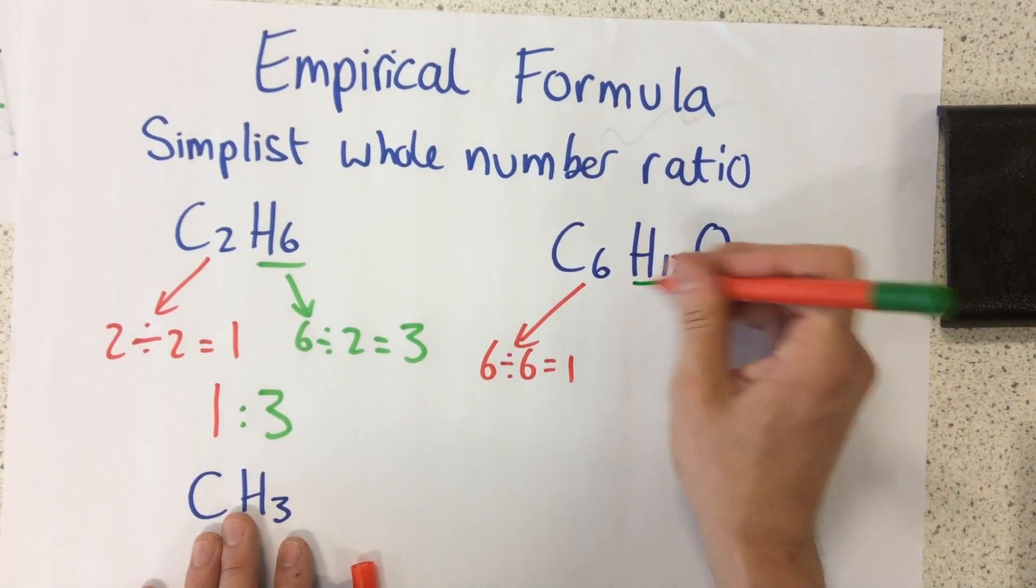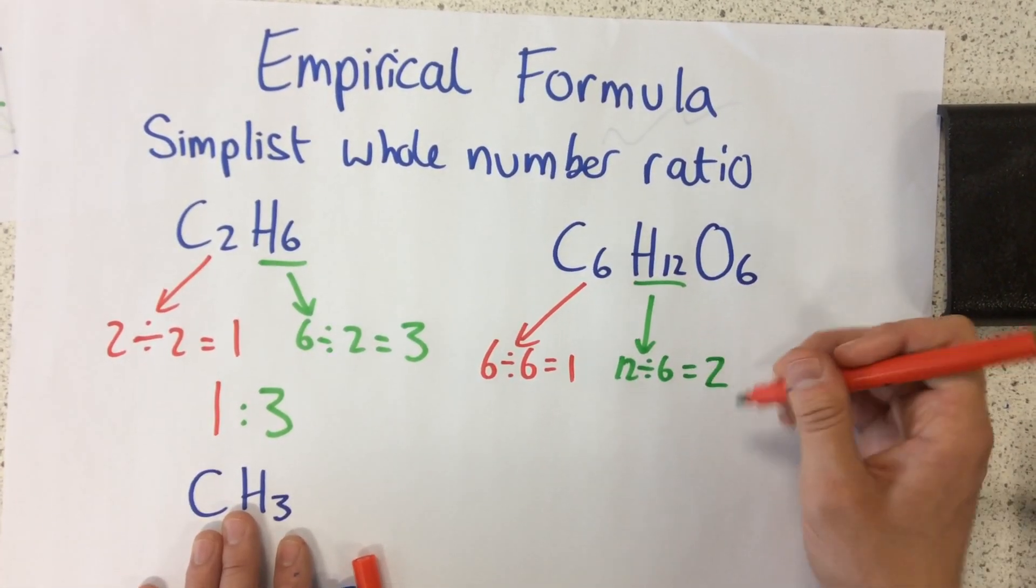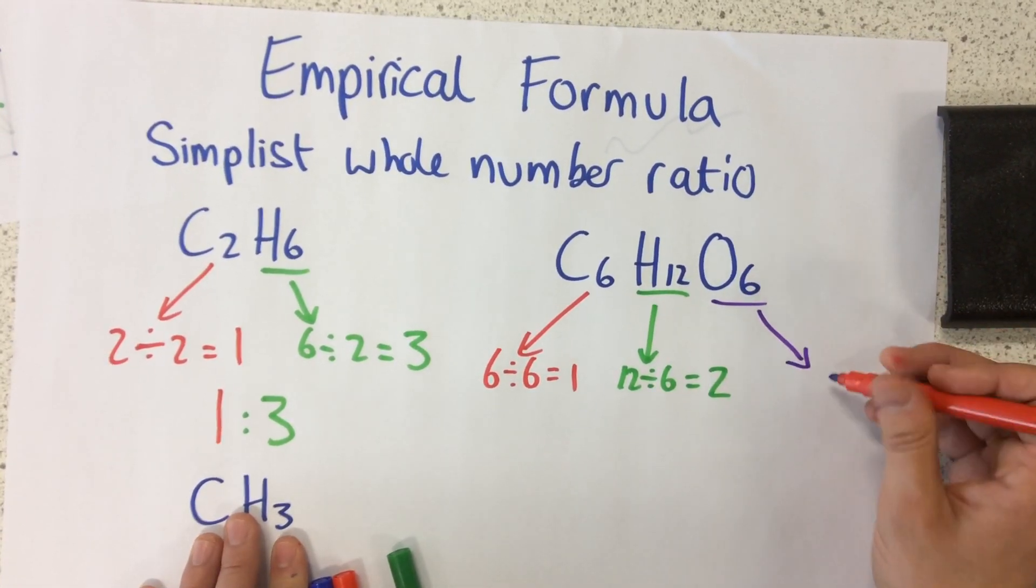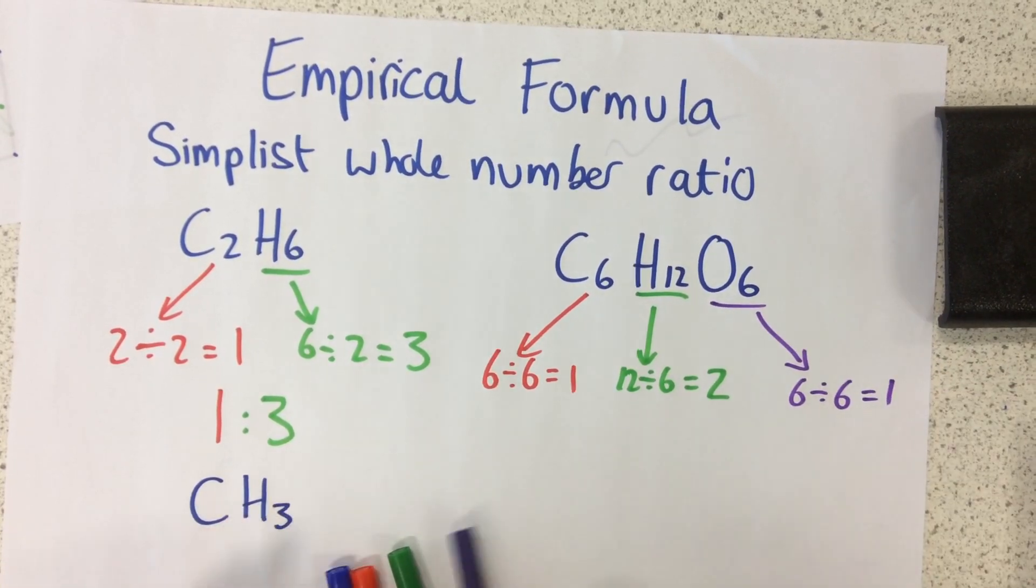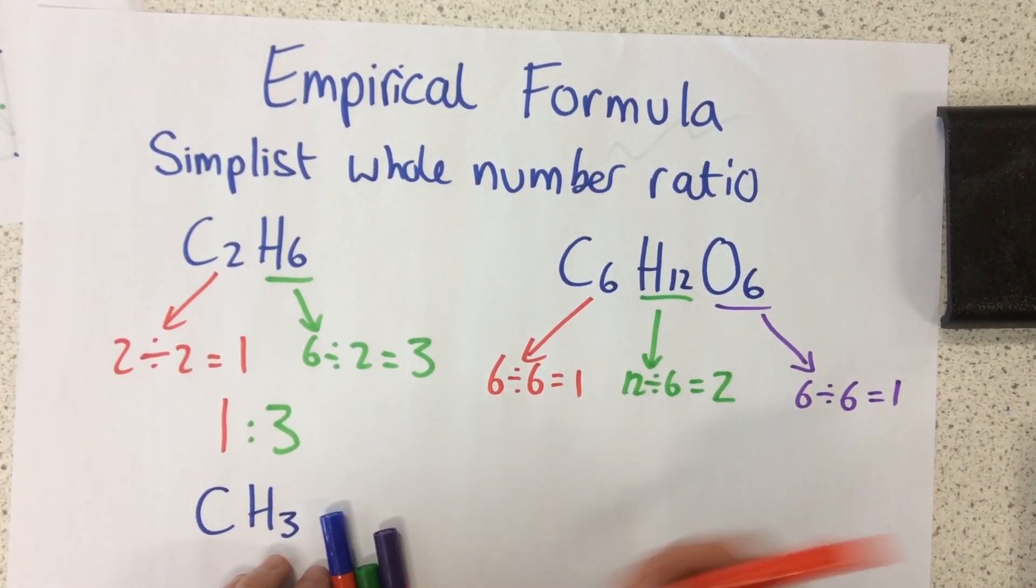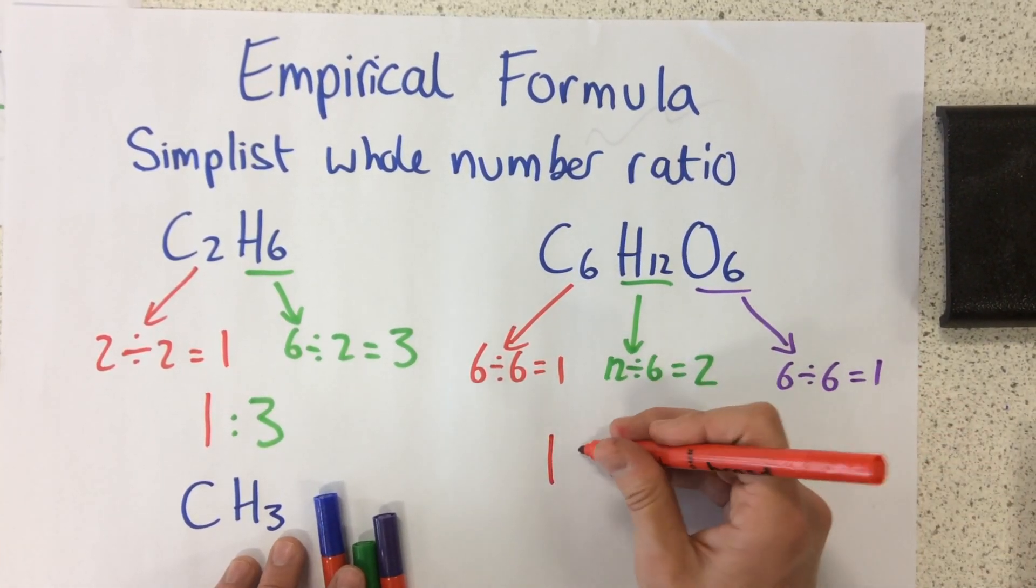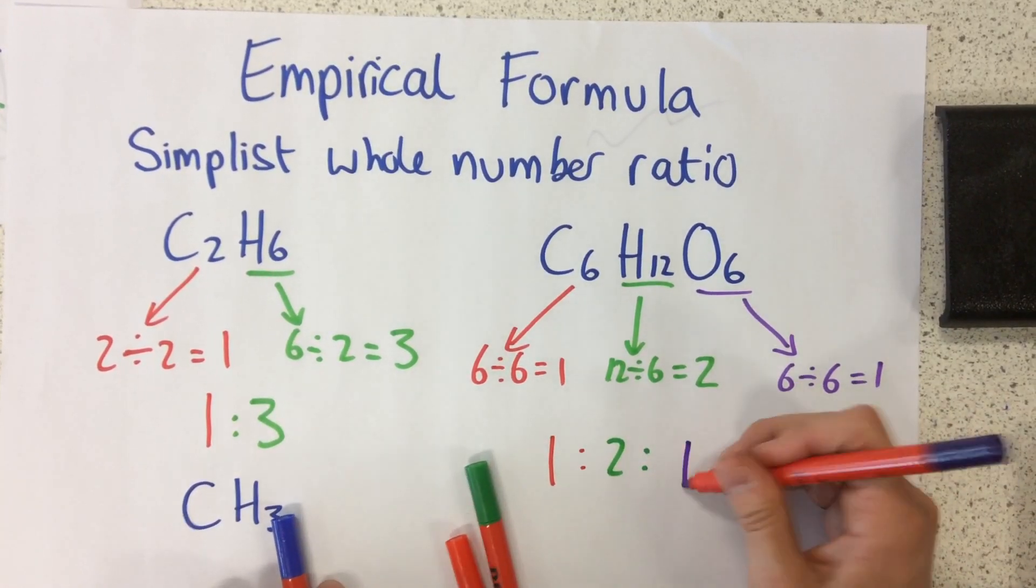Then for hydrogen, what I need to do is 12 divided by six, which is two. And for oxygen over here, it's six divided by six, which is one. So then I'm going to write this as a ratio again. Don't worry, you've just got three numbers this time rather than two. So my ratio now is one to two to one.